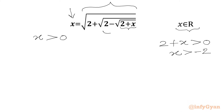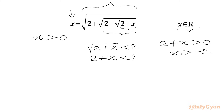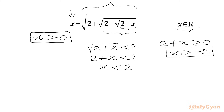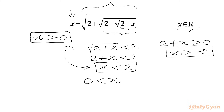Now we consider the next radicand. We will say square root of 2 plus x must be less than 2 for x to be real. Squaring both sides, 2 plus x should be less than 4, or x should be less than 2. Taking the intersection of all three conditions, x must be greater than 0 and less than 2, so our answer will lie in the interval (0, 2).